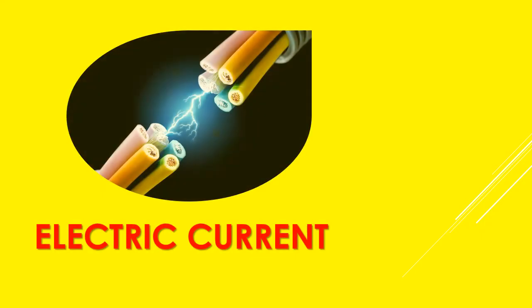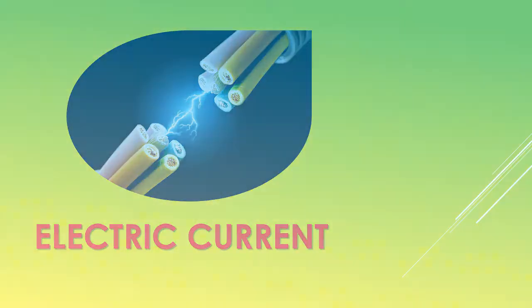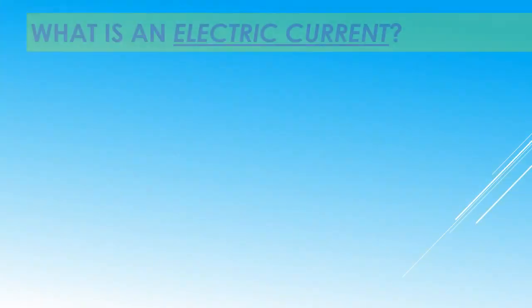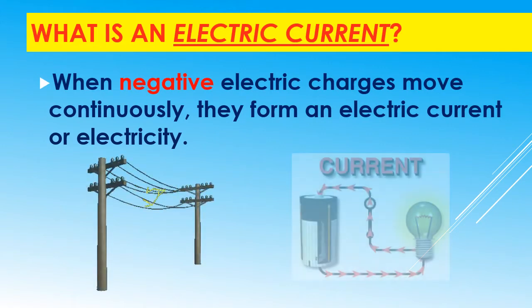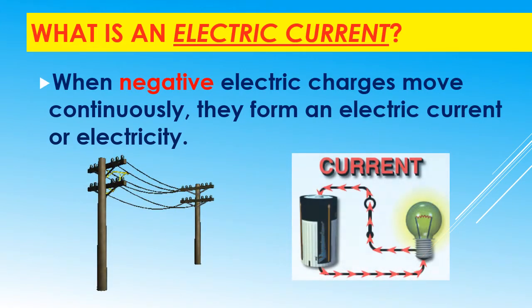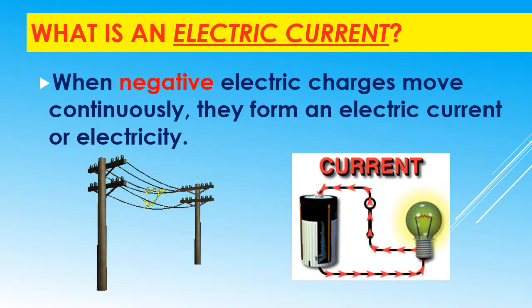Electric current. What is an electric current? When negative electric charges move continuously, they form an electric current, or electricity. As you can see in the figures below, the electric current is moving through the wires.